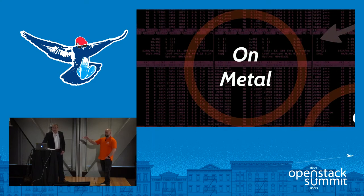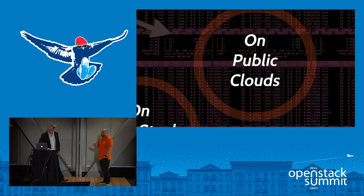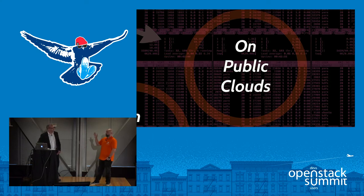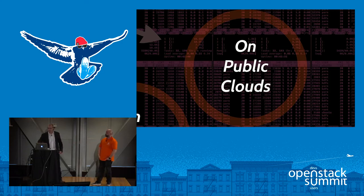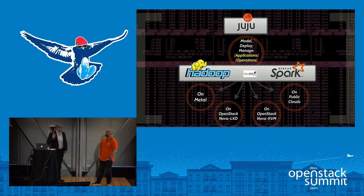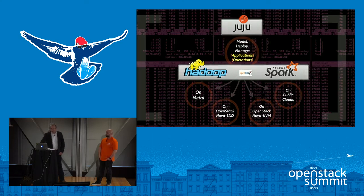Such substrates include bare metal, OpenStack with Nova LXD, OpenStack with Nova KVM, and any other public or private cloud, really. So we want to be able to take really complex things and deploy them anywhere. This is the challenge of deploying — particularly in our case — Hadoop and Spark and all of their friends on these various scenarios. We do this with Juju.